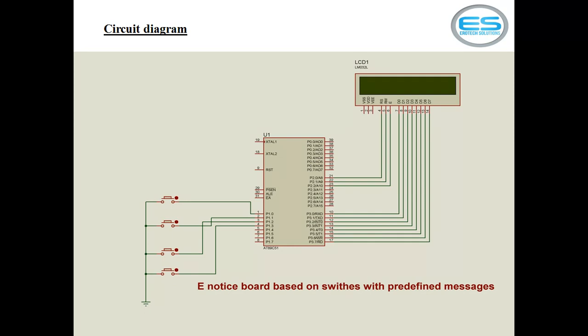If RS control pin logic is 1, the LCD understands it is text. If RS control pin logic is 0, it understands it is a command. The RW logic decides if you're attempting a read or write. If you're looking to write, make sure RW logic is 0. If you're trying to read data from the LCD screen to the microcontroller, make it logic 1.